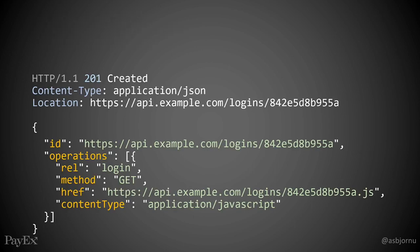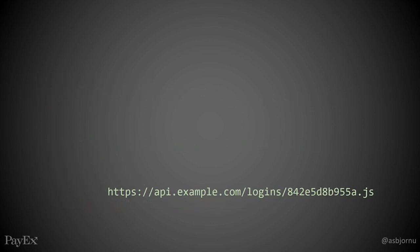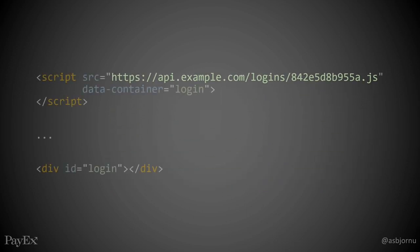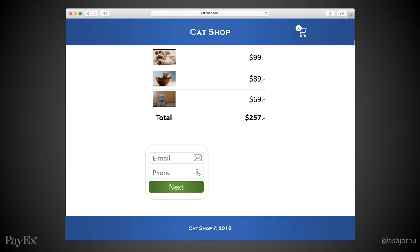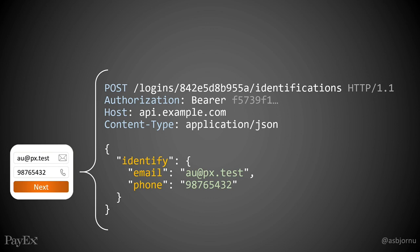In the response, we get a list of operations that might give us alternatives for logging in. In this example, we get a JavaScript URI. Let's take that JavaScript URI and embed it in our web page — we plug it into a script tag and point the data attribute to the div we want the view hosted in. The login view shows up in our web shop, all delivered from an API via hypermedia. When we log in, we do that inside the hosted view. The hosted view itself collects the data from the HTML form and submits it as an API request to its backend API.